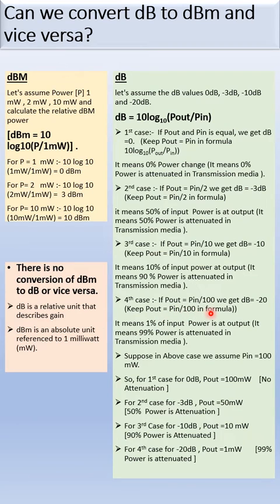So we will get minus 20 dB. It means minus 20 dB means 1% of input power is at output power, and the 99% power is attributed to the transmission media. So this is the absolute power.